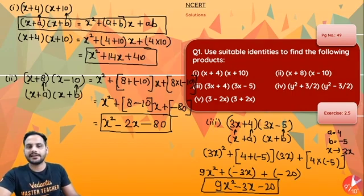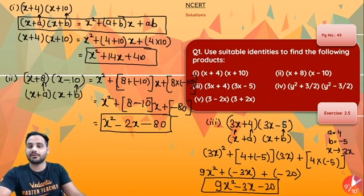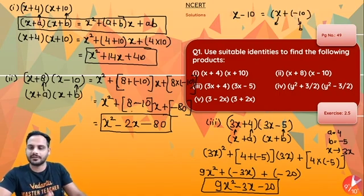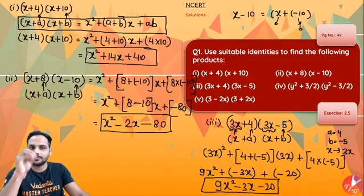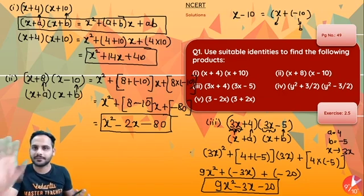The identity used is x plus a into x plus b. If any of the number is negative, then either a or b will become negative, as you can see here b became negative because it was minus 10. x minus 10 I can also write as x plus minus 10, so I have taken b as minus 10. And since in place of x it was 3x, this common part is 3x, so in this identity wherever x was there I have written 3x.